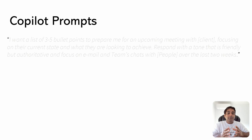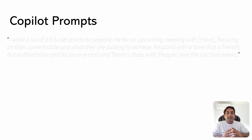Microsoft 365 Copilot utilizes prompts, which are nothing but directives or inquiries that guide it in fulfilling your request. Now, these prompts can be broken down into four components: the objective, the context, the expectations, and the source.